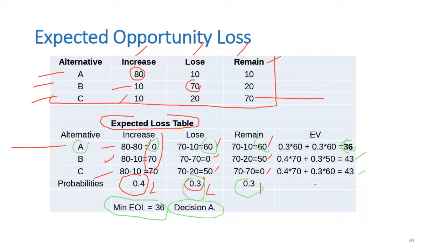So the optimal decision is investment in Alternative A. You can see that the expected opportunity loss concept and steps are very similar to the minimax regret criterion under uncertainty — we simply need to incorporate probabilities. The rest of the steps are the same.